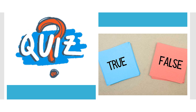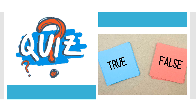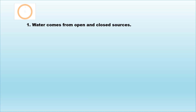Let's see what you have learned by answering the following questions. Write true if the statement is true and false if the statement is incorrect. Question 1: Water comes from open and closed sources. The answer is true.